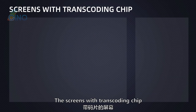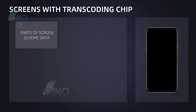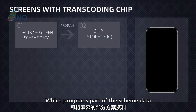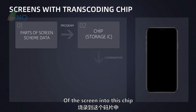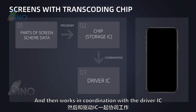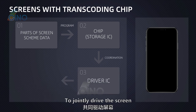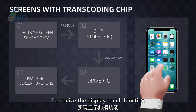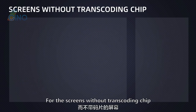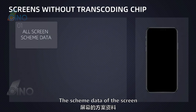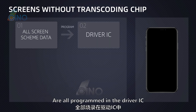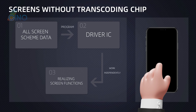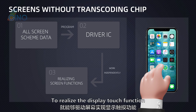The transcoding chip on screens with a transcoding chip is essentially a storage IC, which programs part of the scheme data of the screen into this chip, and then works in coordination with the driver IC to jointly drive the screen to realize the display and touch function. For screens without a transcoding chip, all the scheme data are programmed directly into the driver IC, and only this driver IC drives the screen to realize the display and touch function.